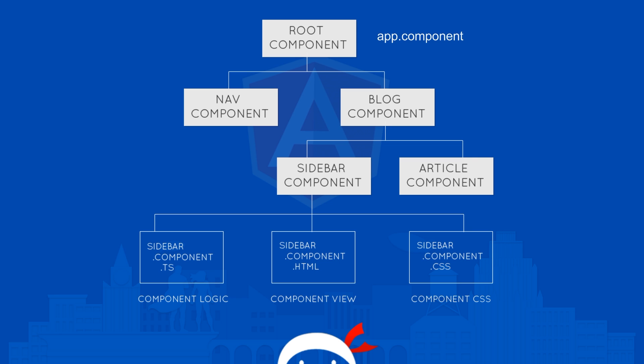In this series I've already mentioned a couple of times that Angular 2 is component based, and what that means is that pretty much everything on your application is seen as a component. Your navbar is a component, your sidebar is a component, your blog is a component, your entire website is a component. When we build an application they're built up of these different components and they take on the form of a tree-like structure where components are nested within each other.